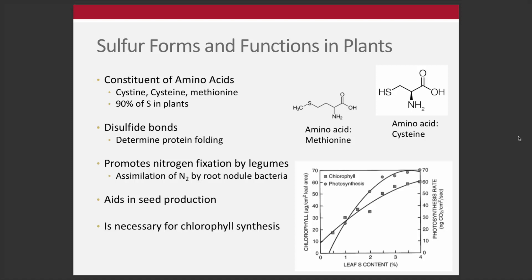Sulfur is important for promoting nitrogen fixation in legumes by rhizobia. It aids in seed production and is also important for chlorophyll and photosynthesis. Looking at sulfur concentration in terms of the leaf versus chlorophyll content and photosynthesis rate, we can see there's a strong relationship between the concentration of sulfur and both chlorophyll and photosynthesis.